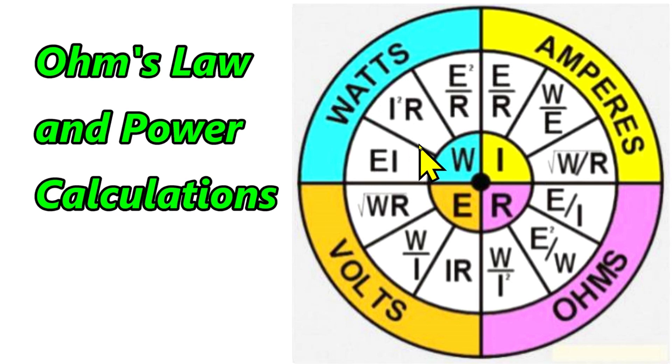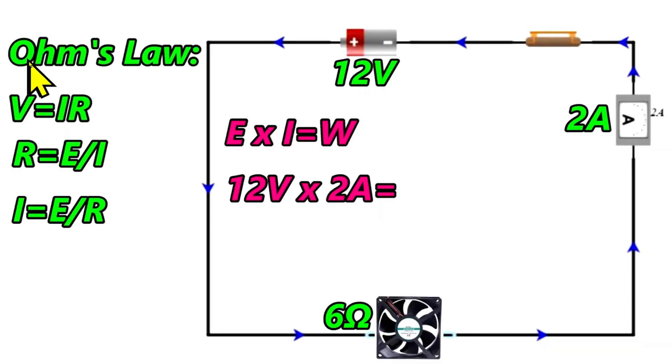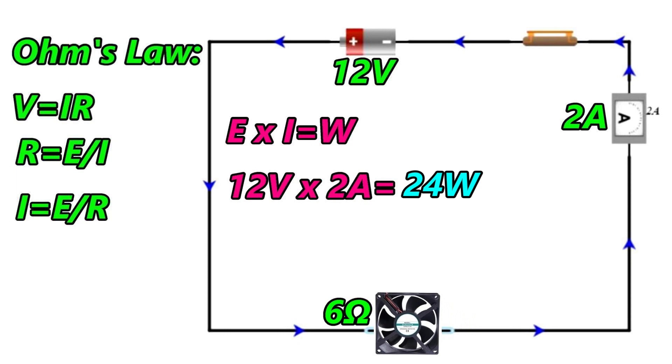So let me give you an example. Here we have another circuit. Over here, we have all three versions of Ohm's law. We have a 12 volt battery. And our ammeter is reading 2 amps. And we have a little fan down here. And here is our formula for watts. Volts times amps equals watts. So we've got 12 volts. We've got 2 amps. How many units of power, or watts, will this fan be using? If you said 24 watts, you're correct.